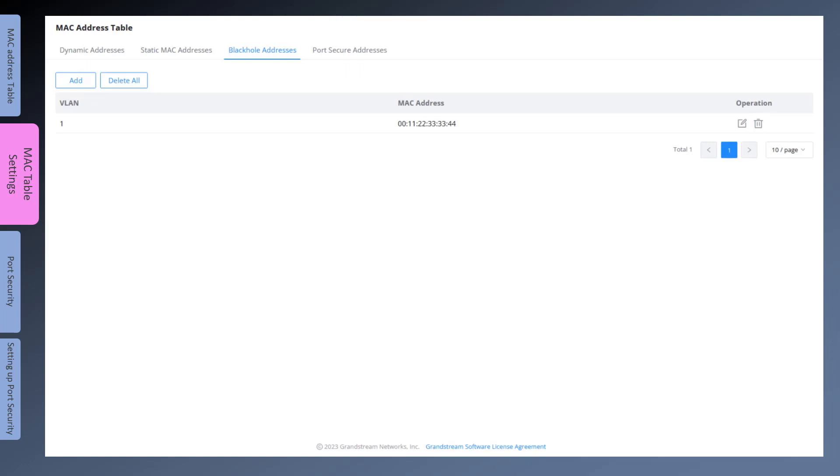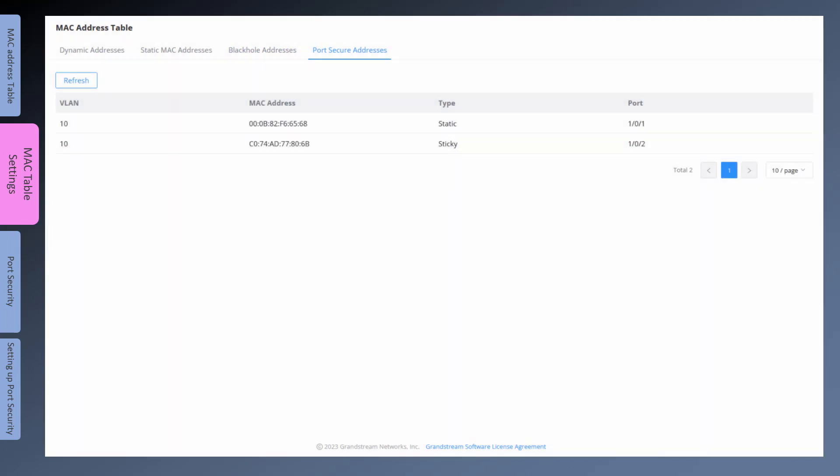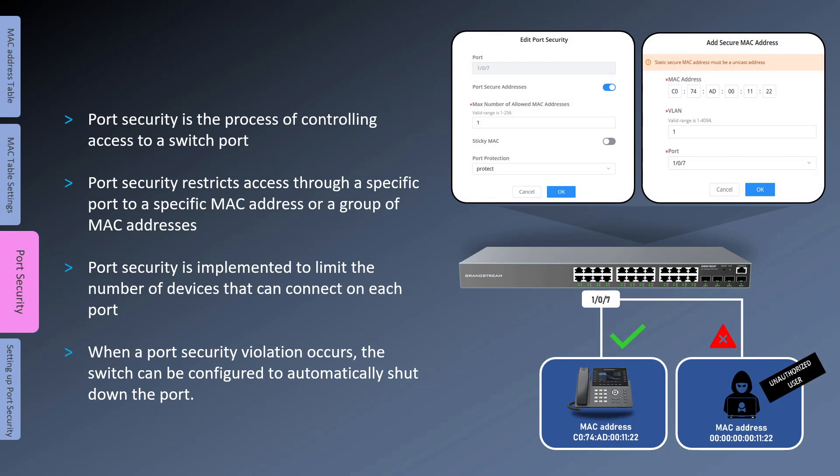The Port Secure Addresses tab displays the list of MAC addresses that have been added manually or learned dynamically on the interfaces that have port security enabled. Port security is a mechanism implemented to control what devices are able to connect to a switch interface. On GWN switches, port security can be configured to restrict access to a specific MAC address or a group of MAC addresses, and it can also be configured to limit the number of devices that can connect to a specific interface.